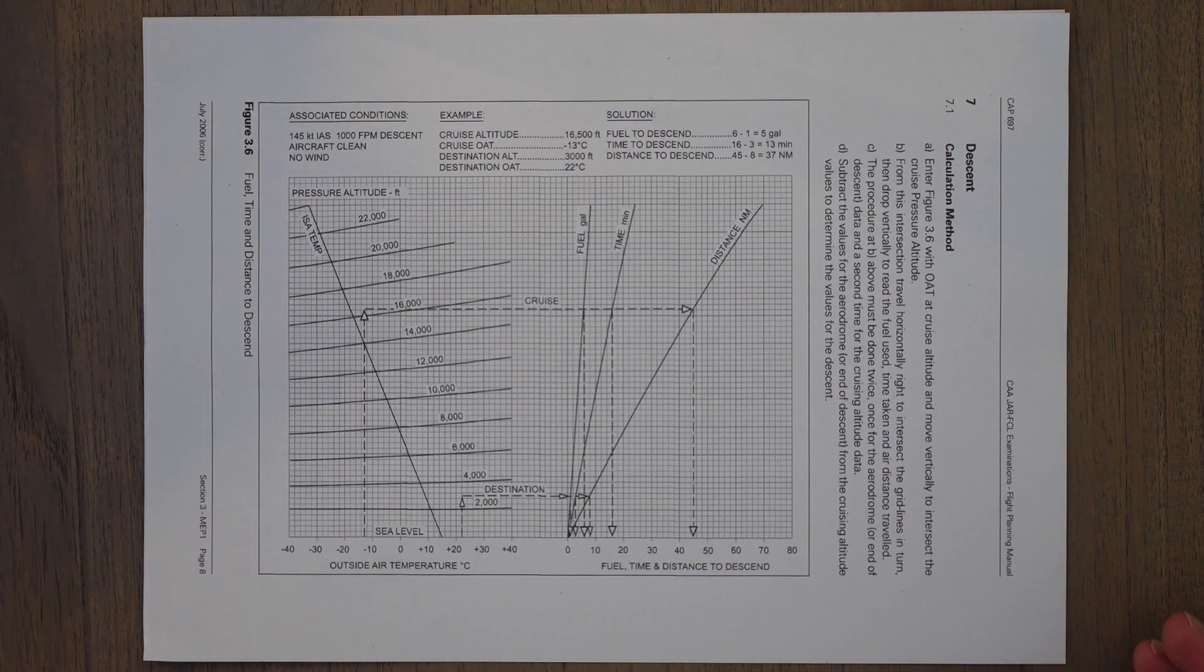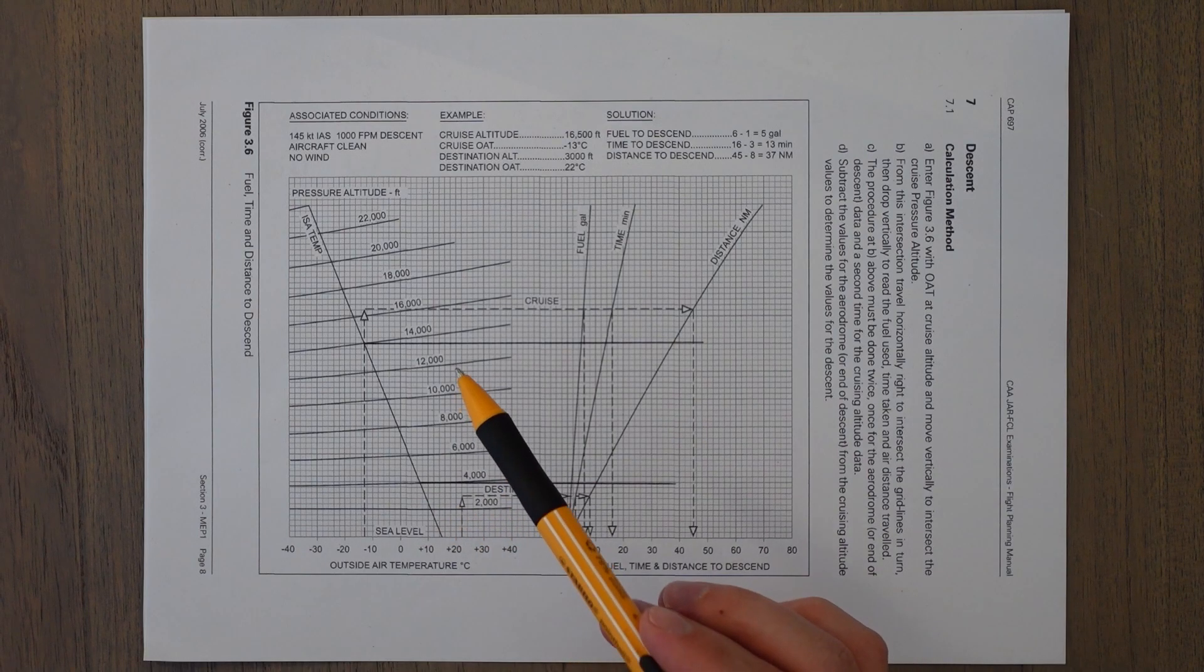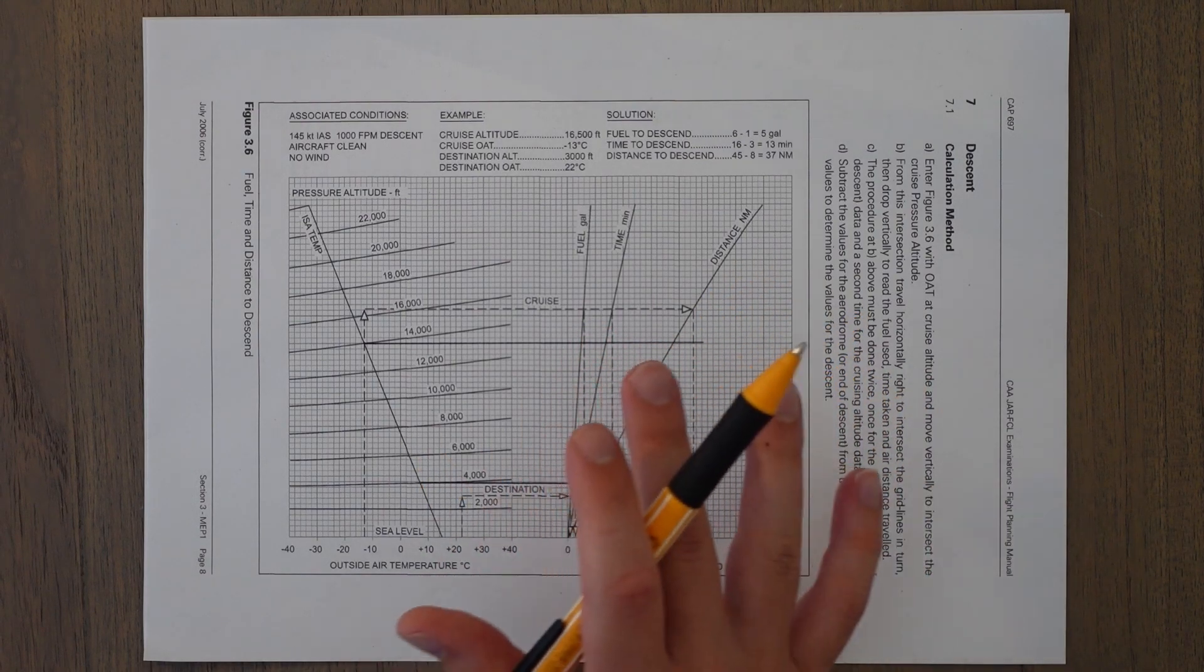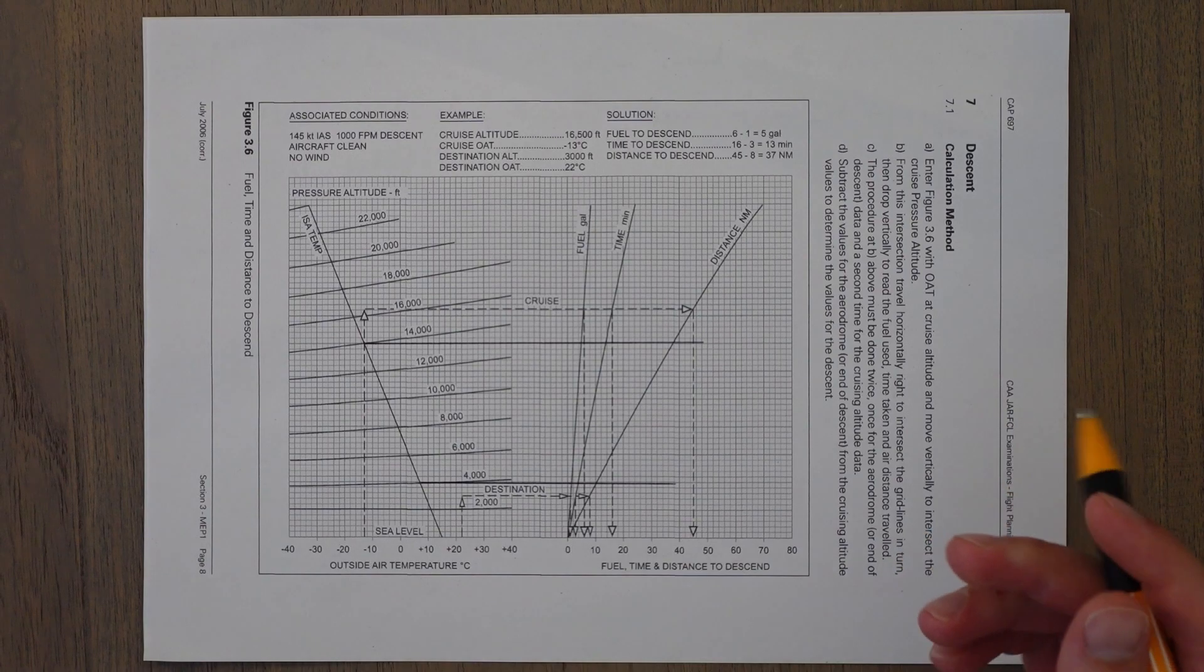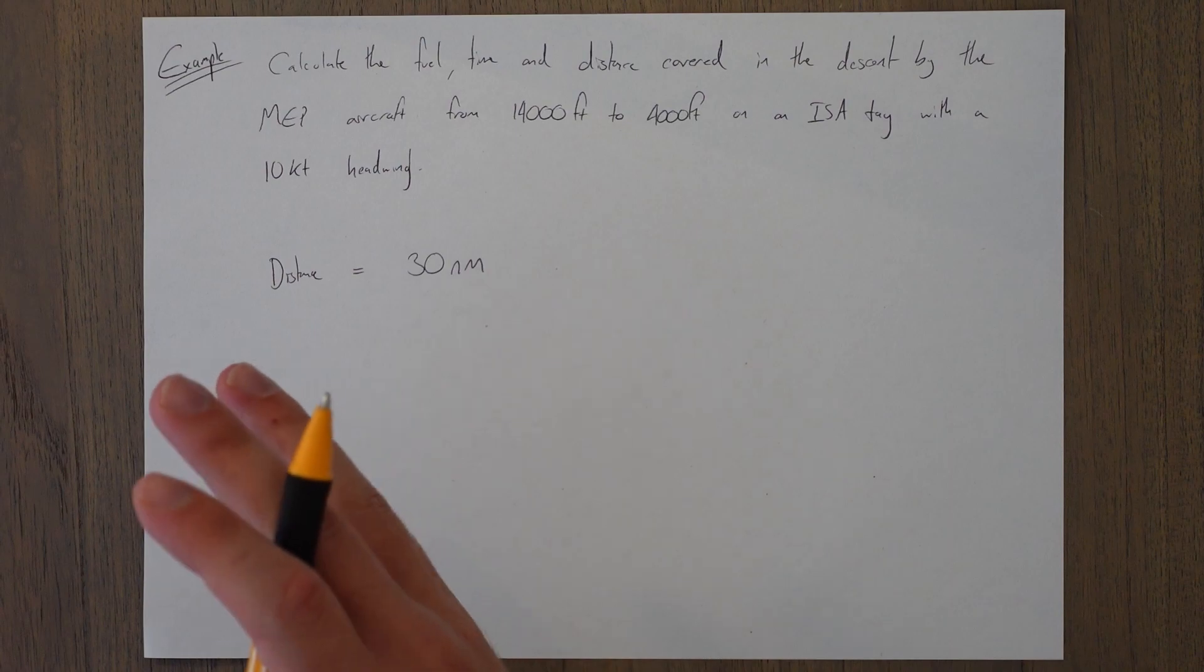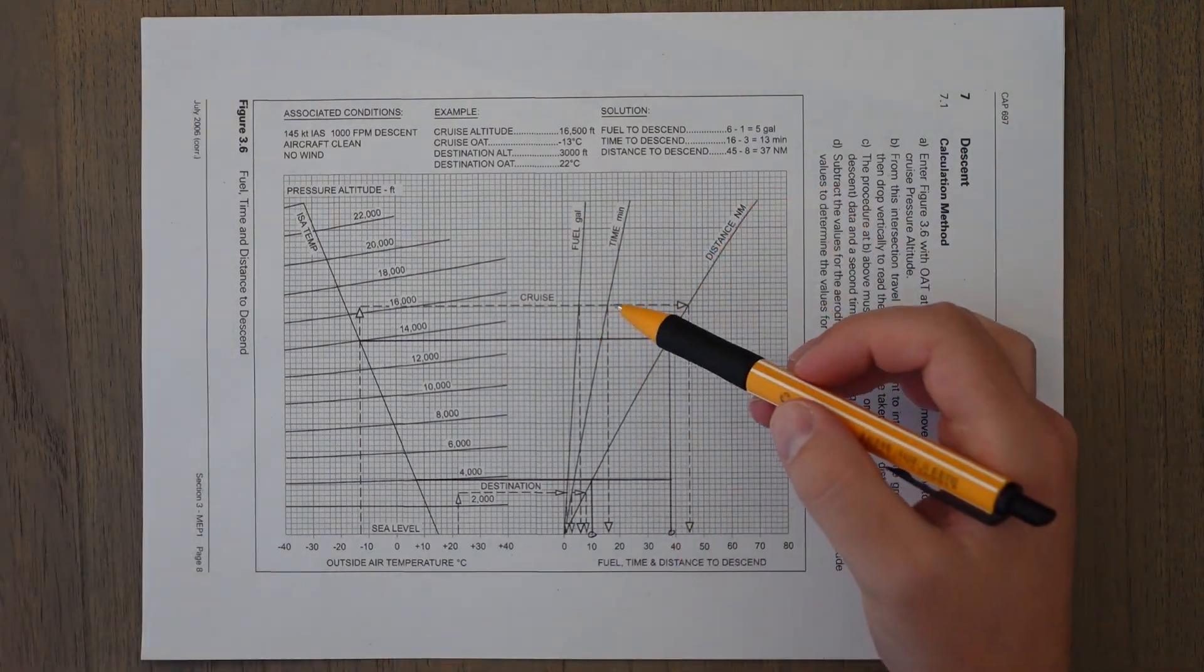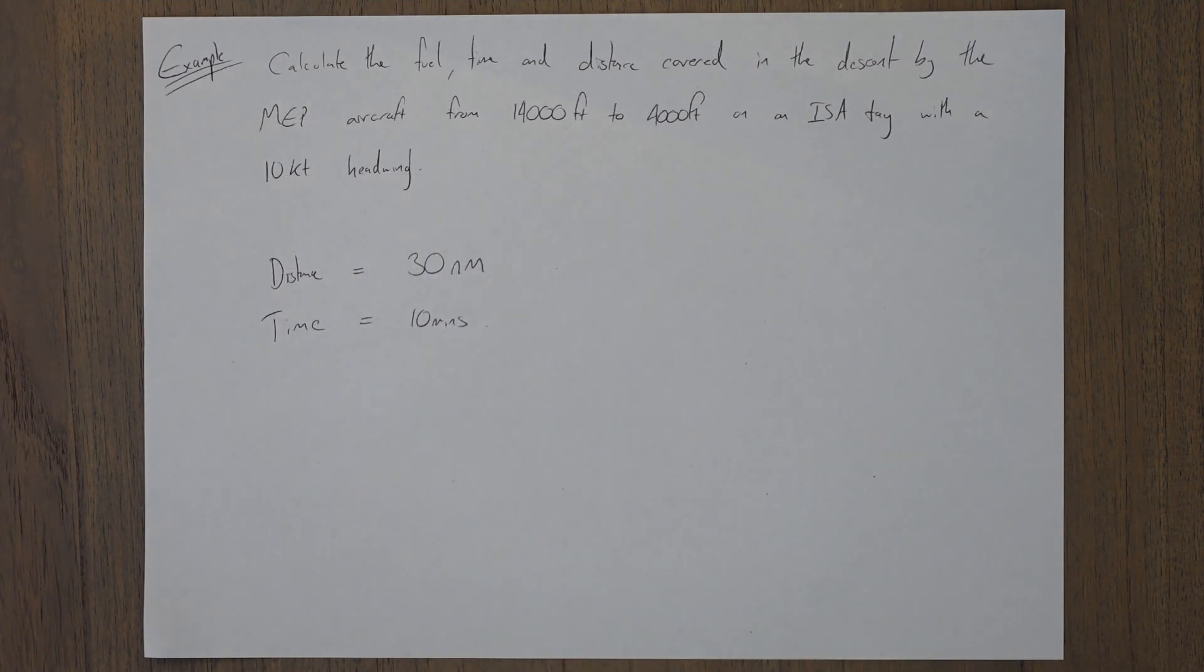Let's just draw some lines for 14,000 and 4,000 feet to start off with. It's an ISA day, so we just follow this line up. Once we've drawn the lines for 4,000 and 14,000, we then draw down to get the different values. Because there's going to be quite a lot of lines here, just take your time. I'll start with maybe the distance. The first distance we can see is 40, and the next one is 10. We're wanting to find the difference, so 30 nautical miles.